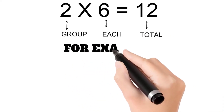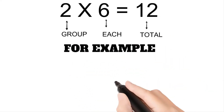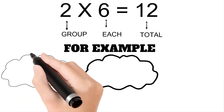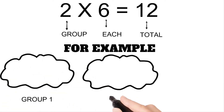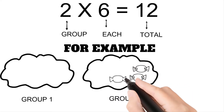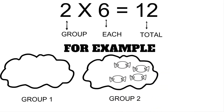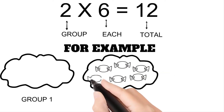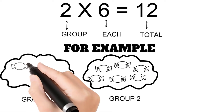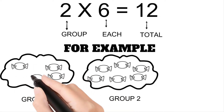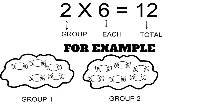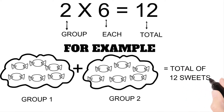For example, we have two groups — group one and group two. In each group there are six sweets. When we add these two groups, you get a total of twelve sweets.